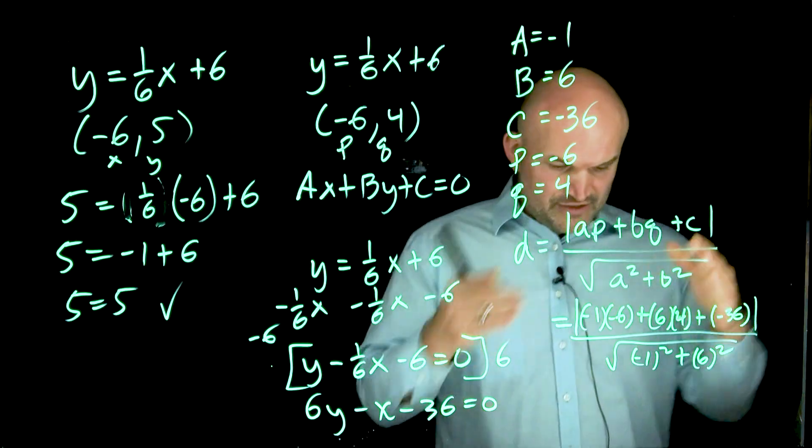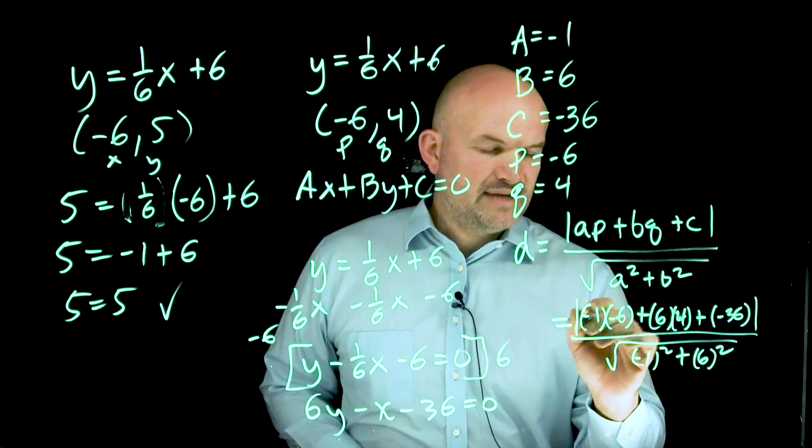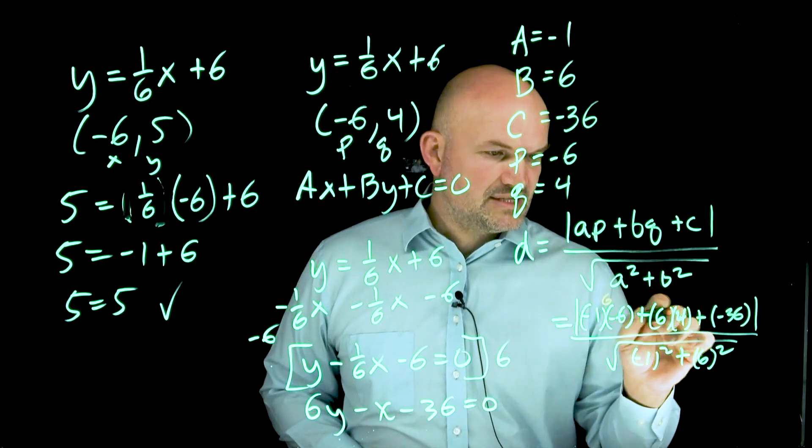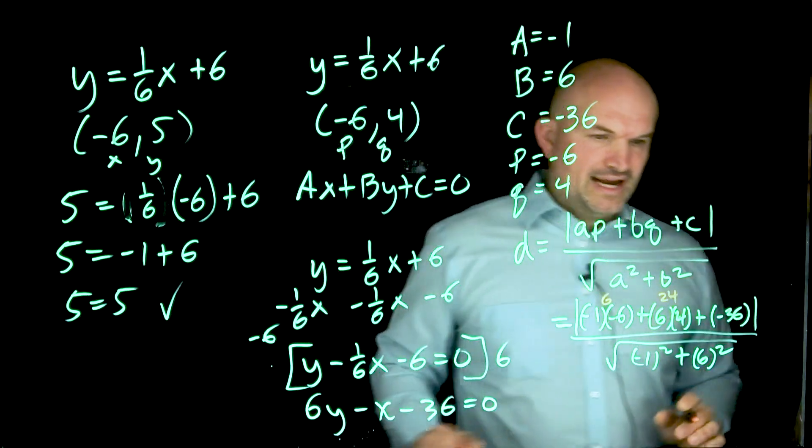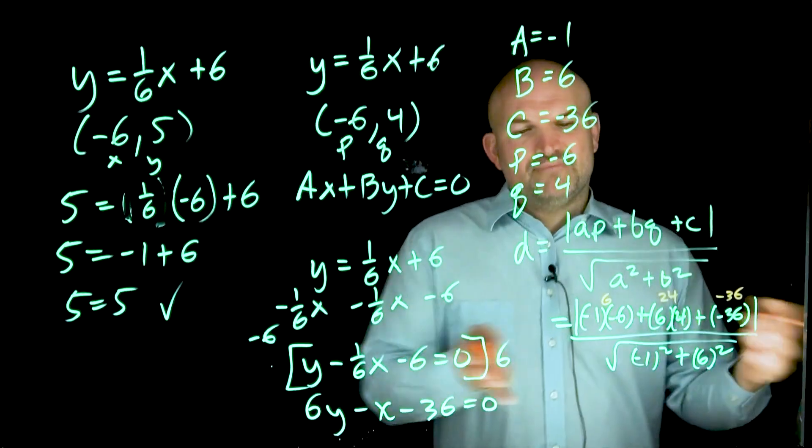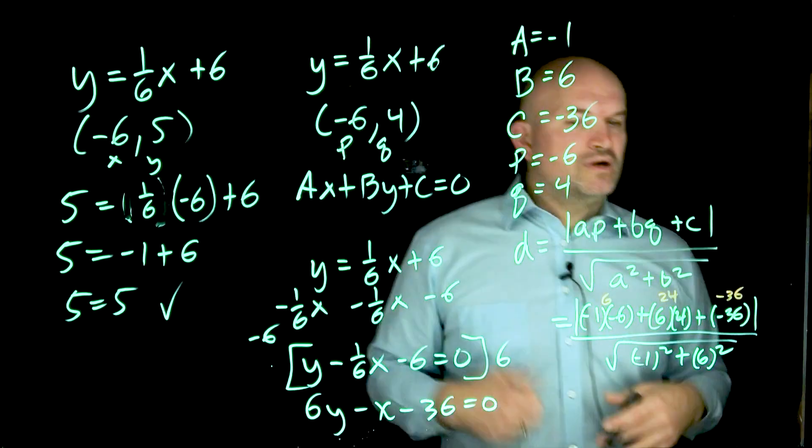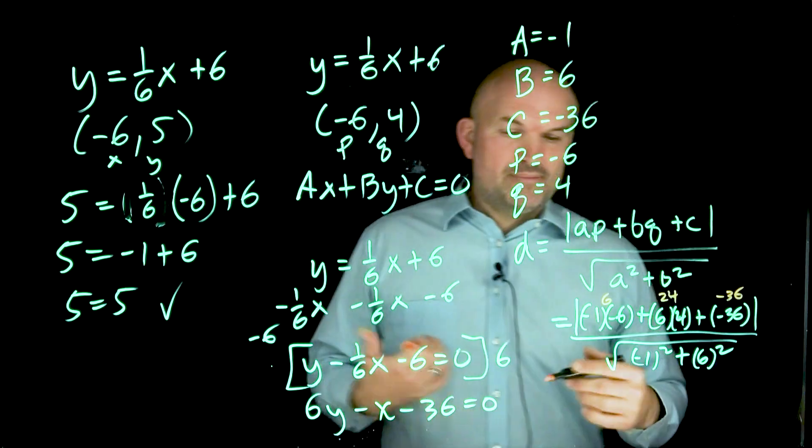Okay, so let's write up the values up top, just because I'm running out of space. Negative one times negative six is positive six. Six times four is 24. And negative 36 is just negative 36. So if I combine all of those up, well, six plus 24 is 30, 30 minus 36 is negative six. But remember, ladies and gentlemen, it's absolute value.